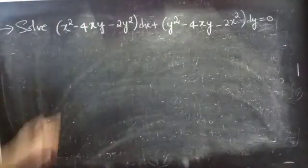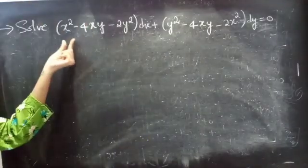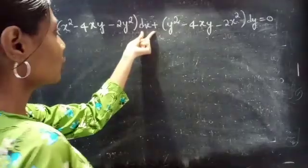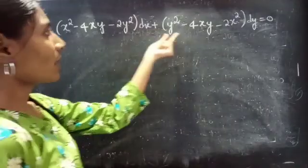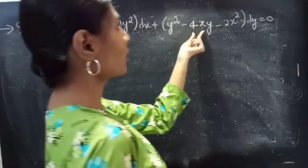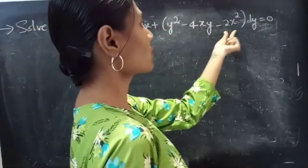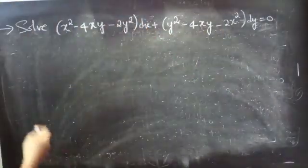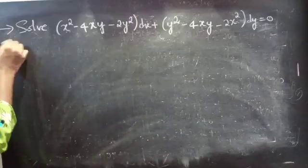Problem: solve (x squared minus 4xy minus 2y squared) dx plus (y squared minus 4xy minus 2x squared) dy equals to 0.